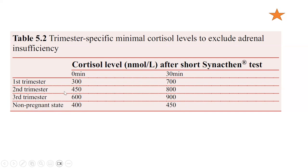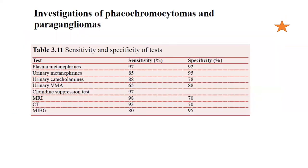A question has been asked previously specifically for a lady in the second trimester. Regarding investigation for phaeochromocytoma and paraganglioma: plasma metanephrines are 97% sensitive, making them the most sensitive biochemical test. Urinary metanephrines are the most specific at around 95%. So to remember: plasma metanephrines are most sensitive and urinary metanephrines are most specific.